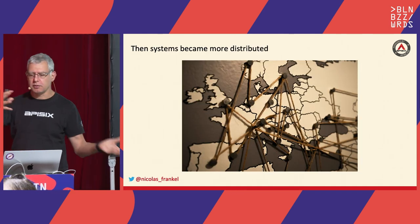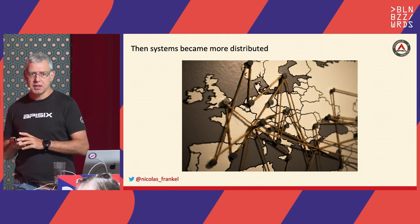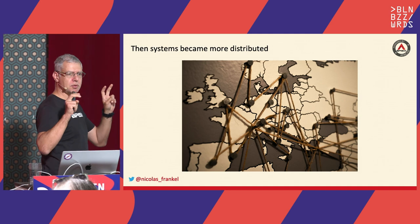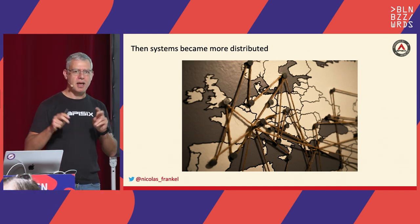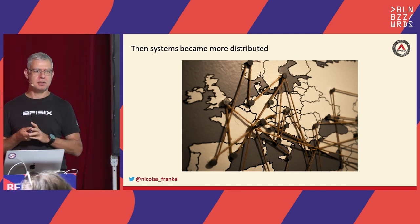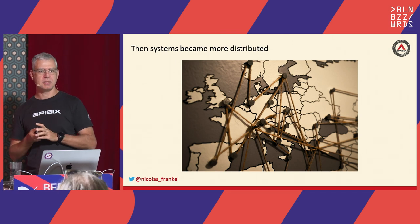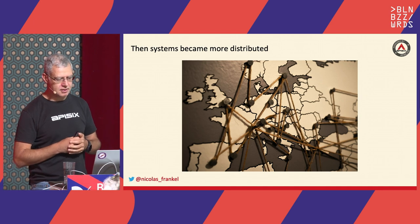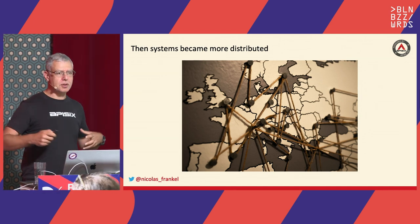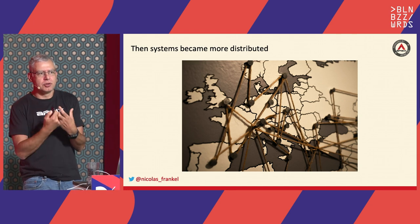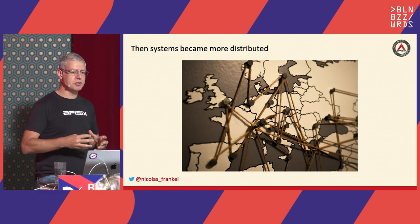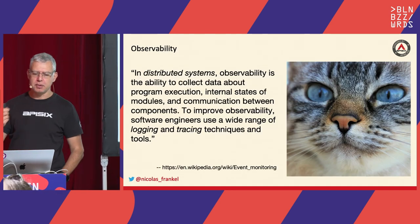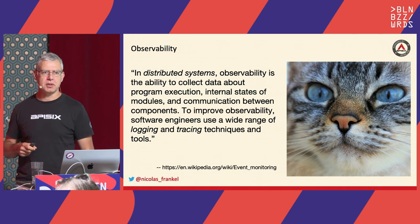But unfortunately, or fortunately, I don't know, the system became more and more distributed. In this talk, I will use the words 'distributed system' instead of the M-word, which I believe is very tainted — the M-word being microservices. So if at any time I say microservice, just slap me. With distributed services, we couldn't just watch a screen and try to infer what happened, so we came up with the word observability.